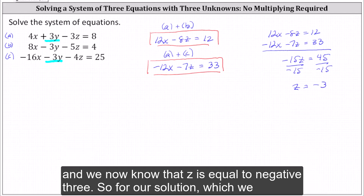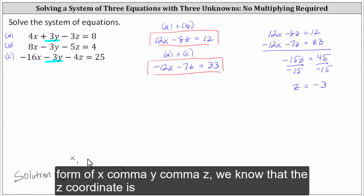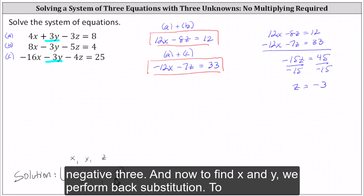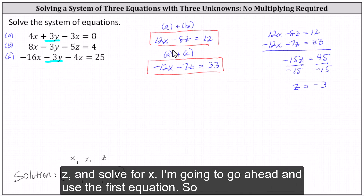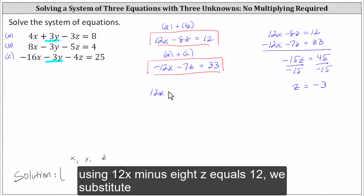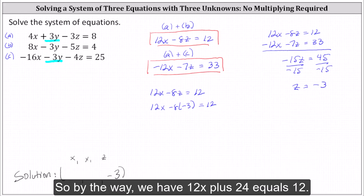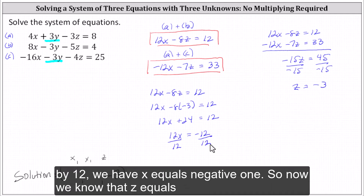For our solution, which is an ordered triple in the form x, y, z, we know the z coordinate is negative three. To find x, we perform back substitution using 12x minus 8z equals 12, substituting negative three for z: 12x minus 8 times negative three equals 12, so 12x plus 24 equals 12. Subtracting 24 from both sides gives 12x equals negative 12, and dividing both sides by 12 gives x equals negative one.